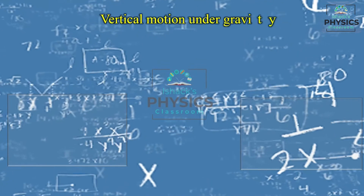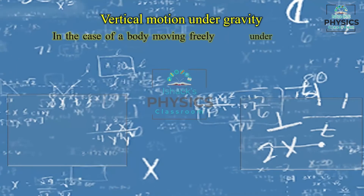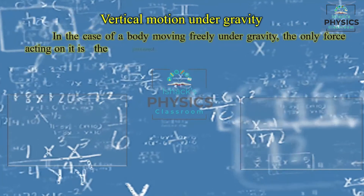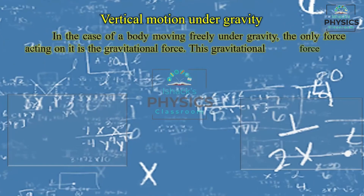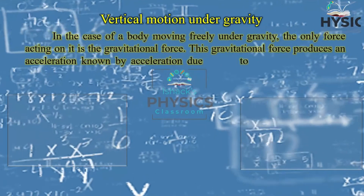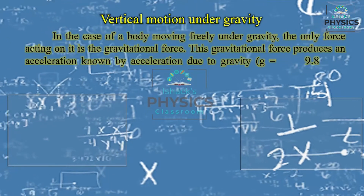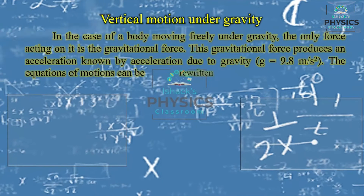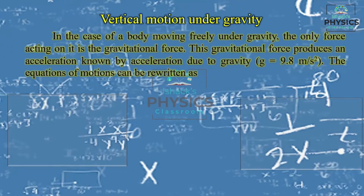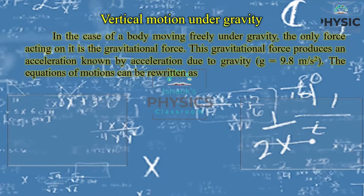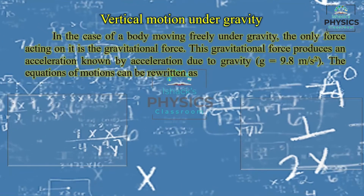Vertical motion under gravity: in the case of a body moving freely under gravity, the only force acting on it is gravitational force. This gravitational force produces acceleration due to gravity, that is g = 9.8 m/s². The equations of motion can be written by replacing acceleration a with g.